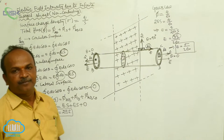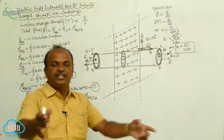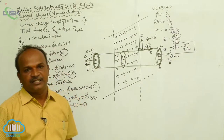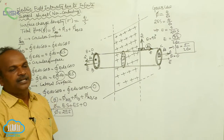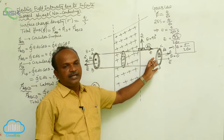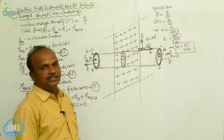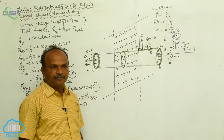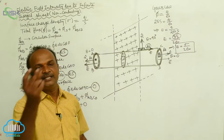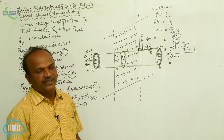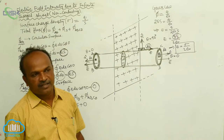To find the electric field intensity at a point with respect to the infinite charged sheet, we consider a Gaussian cylinder oriented in the horizontal direction. The Gaussian cylinder has three surfaces: AB is one circular surface, CD is the other circular surface, and ABCD is the lateral surface.